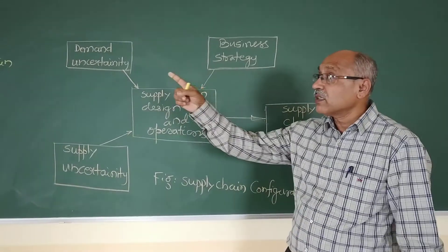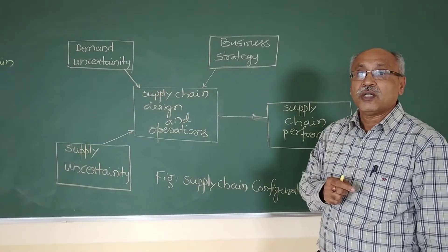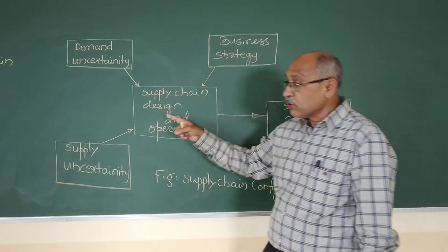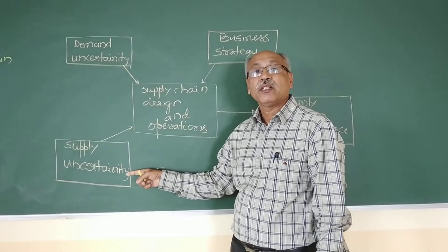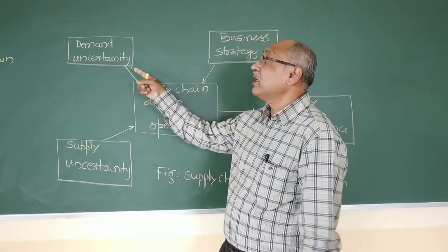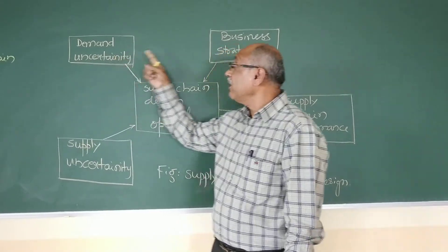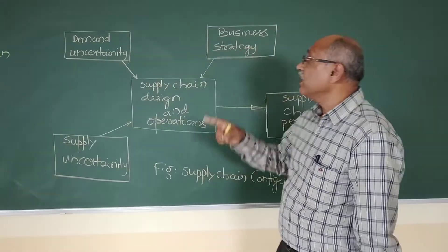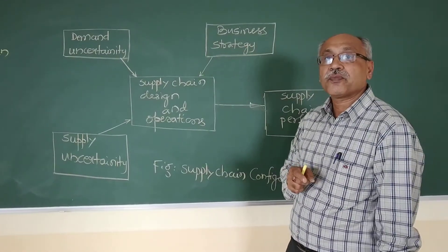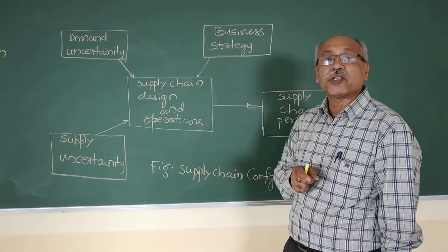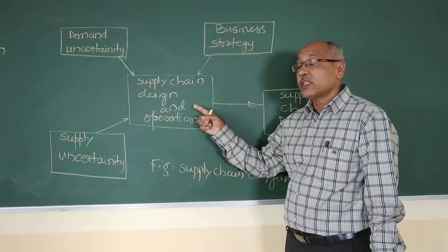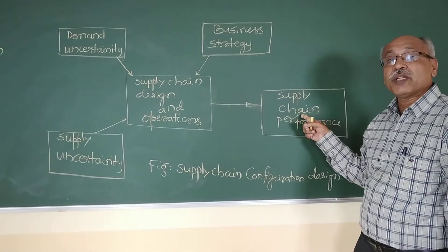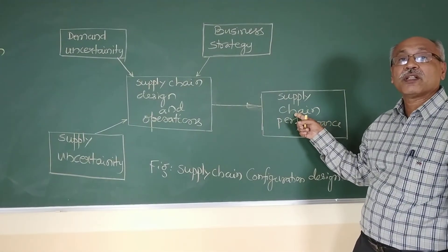What is an agile supply chain? A company has to align with its business strategy, look into supply uncertainty, and keep in mind demand uncertainty. These three factors — demand uncertainty, supply uncertainty, and business strategy — influence a company's internal operations. Each company's performance is ultimately measured by the customer.